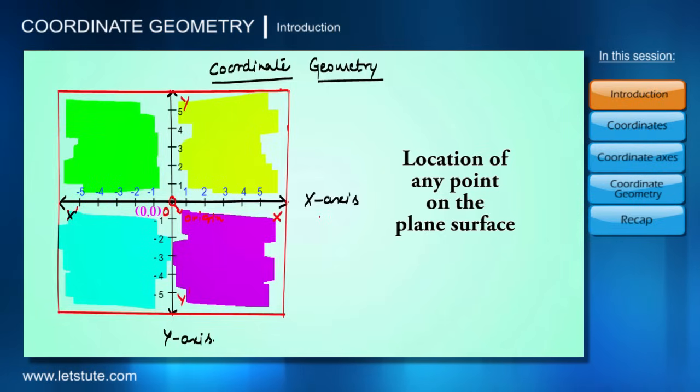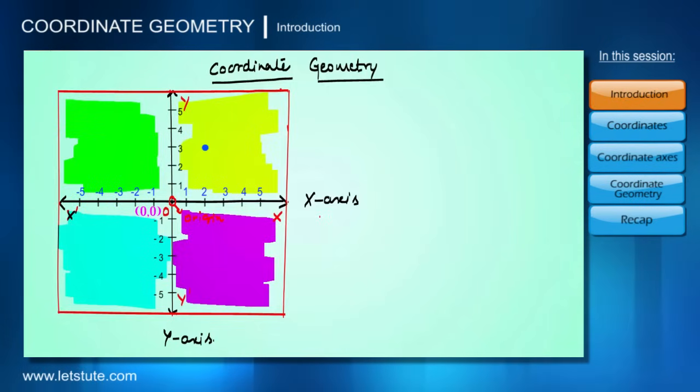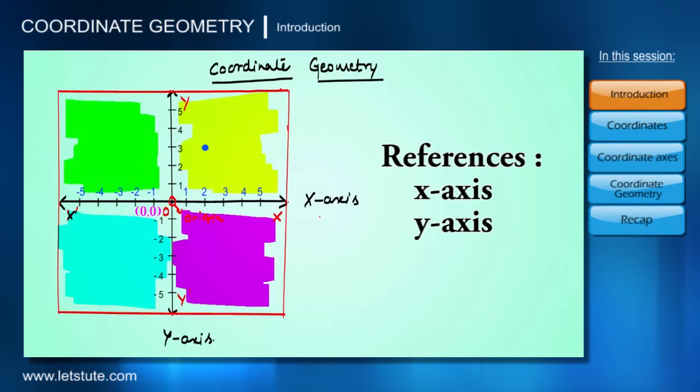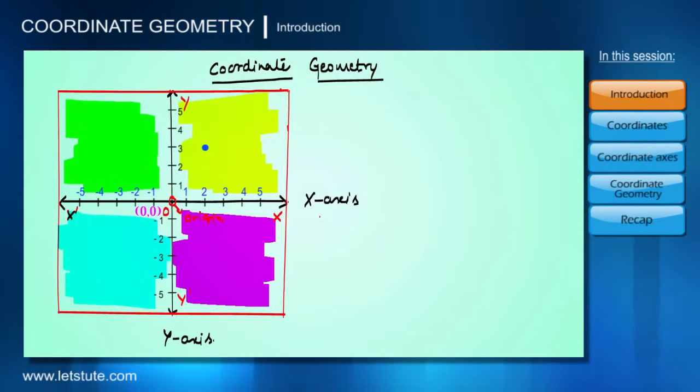For finding the location, we require a reference, so we take the x-axis and y-axis as references. We can see that this point covers two units on the positive x-axis and three units on the positive y-axis. Therefore, its location is given as two units for x-axis, three units for y-axis.